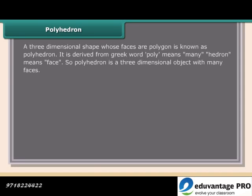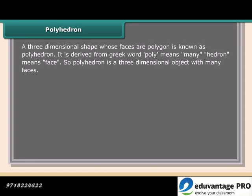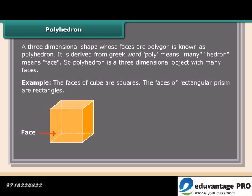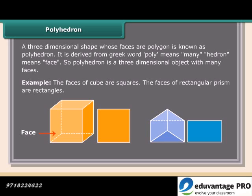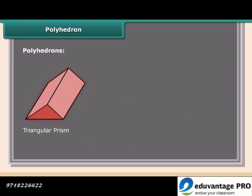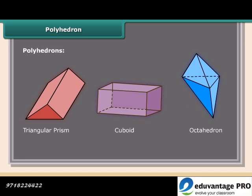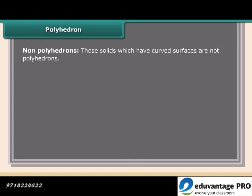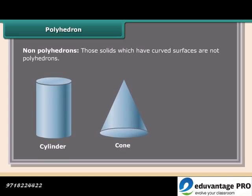A three-dimensional shape whose faces are polygons is known as a polyhedron. It is derived from the Greek words: 'poly' meaning many and 'hedron' meaning face. So a polyhedron is a three-dimensional object with many faces. Examples include cubes with square faces and rectangular prisms with rectangular faces. Those solids which have curved surfaces — such as cylinders, cones, and spheres — are not polyhedrons.